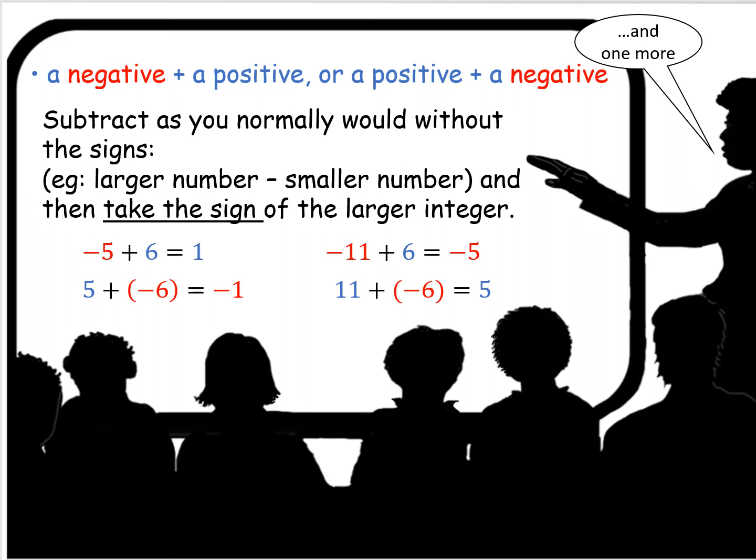So negative 11 plus six is negative five. Without the signs, 11 minus 6 is 5. The sign of the solution is negative because 11 is the bigger number and it is negative. Likewise, 11 plus negative 6 equals 5 — 11 take away 6 is 5, and since 11 is bigger than 6 and is positive, the answer is positive.